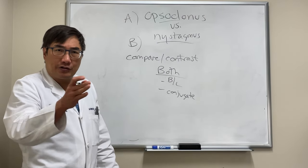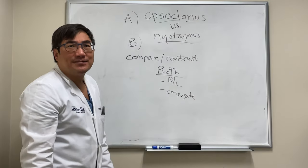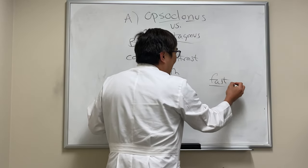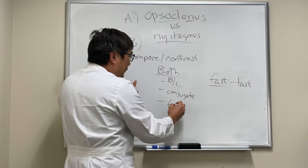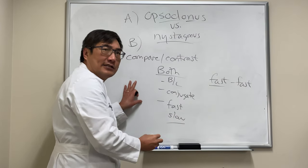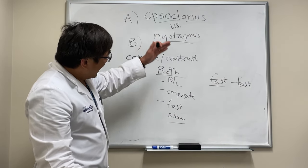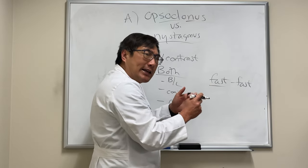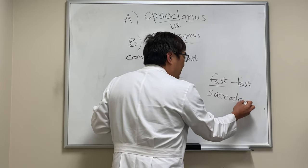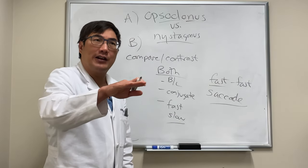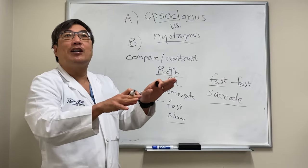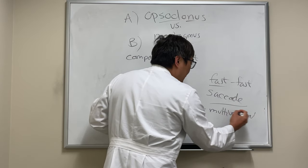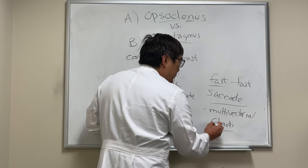There is pendular nystagmus where there's neither a fast nor slow phase, but in opsoclonus it's fast-to-fast — everything is fast. Opsoclonus is back-to-back saccades with no inter-saccadic interval: one saccade after another. If it's horizontal we call it flutter, but if it's multi-vectorial we call it opsoclonus. It's a very chaotic movement — it looks like the film has been sped up on the camera.